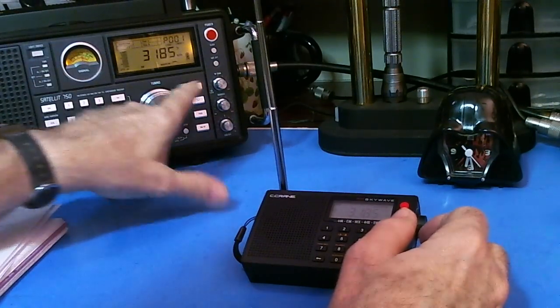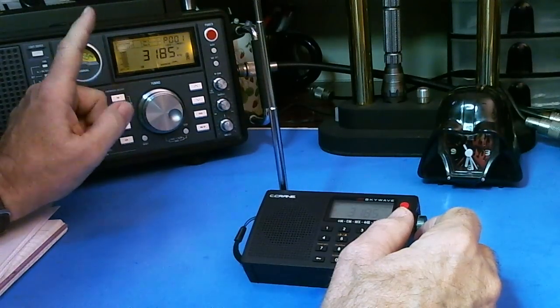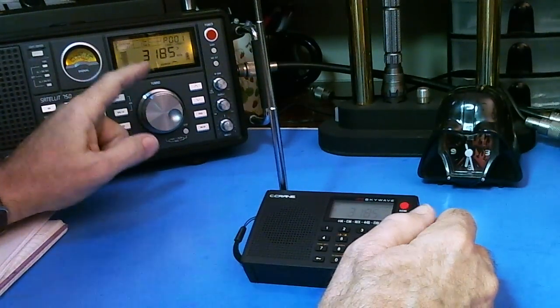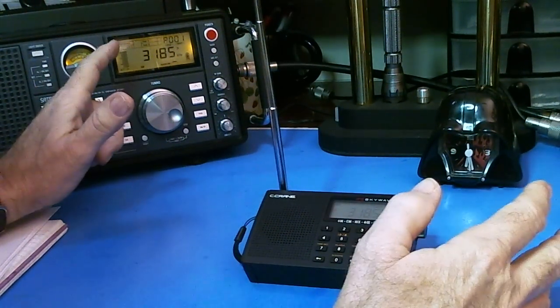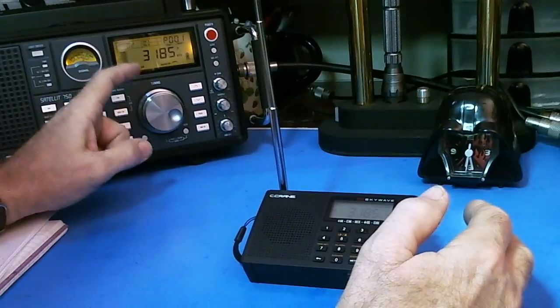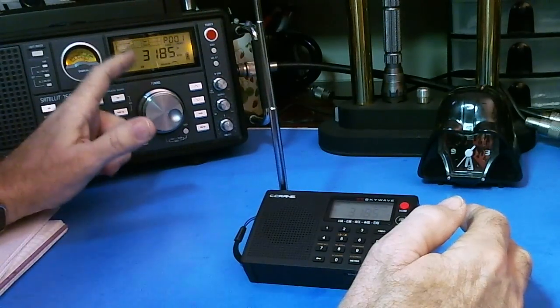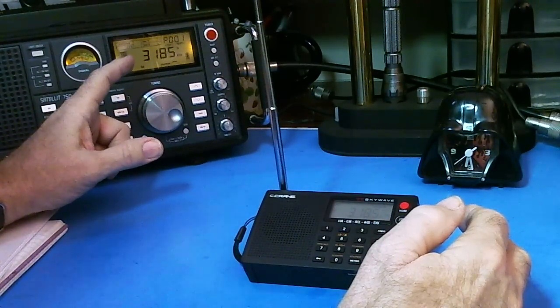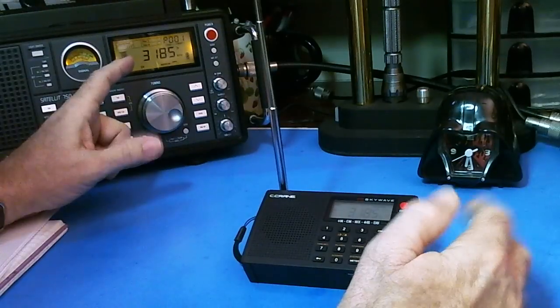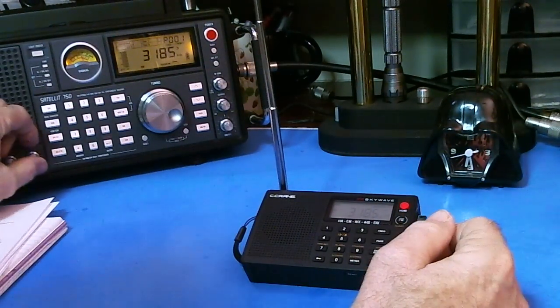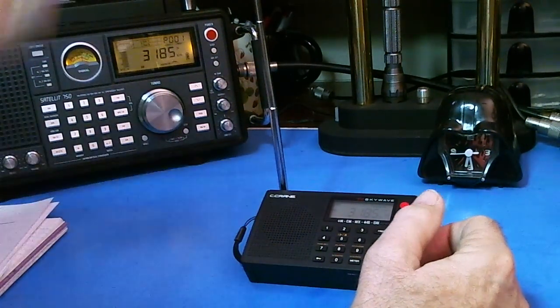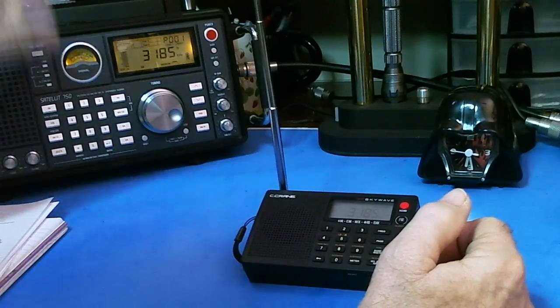Now the Grundig only has two filters, a narrow one and a wide one, and I usually leave it on the narrow so yeah I did the scan with the filter on the narrow and I don't remember what the bandwidth is, how many kilohertz wide it is, I just don't remember sorry. It's an exercise for the student to look that up.